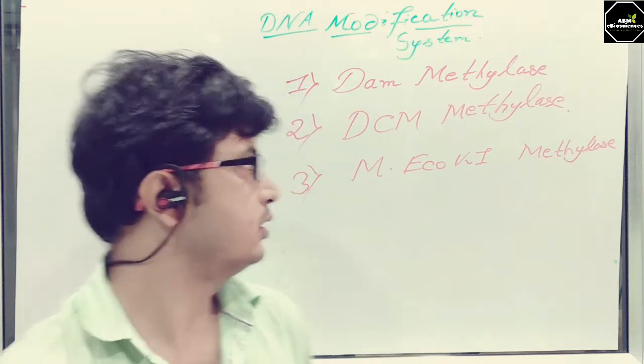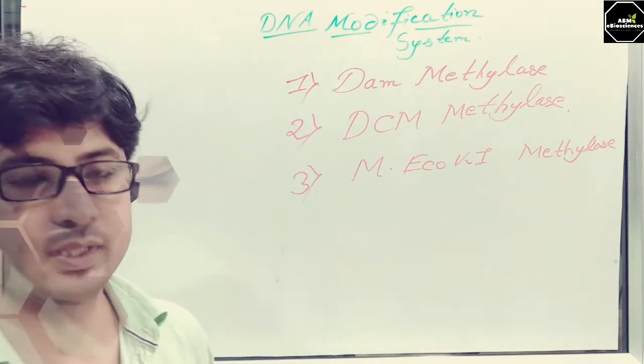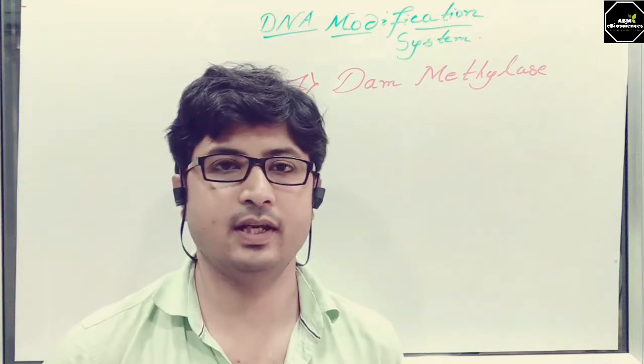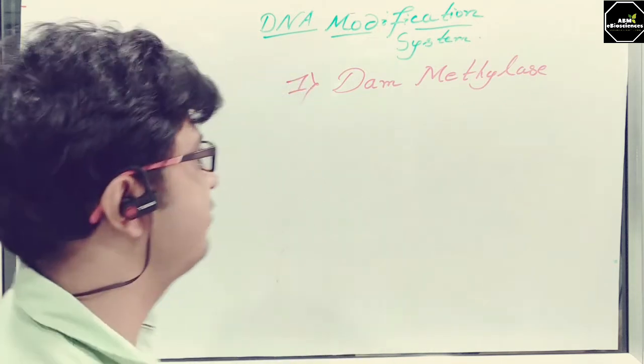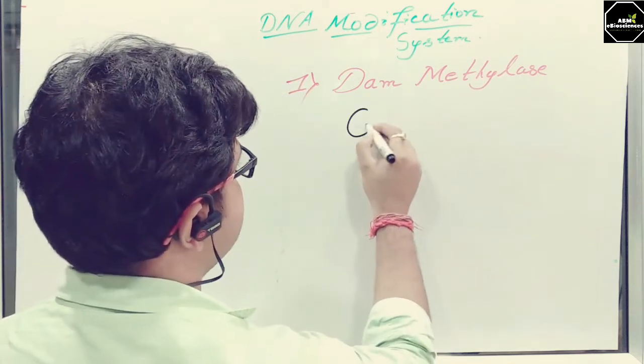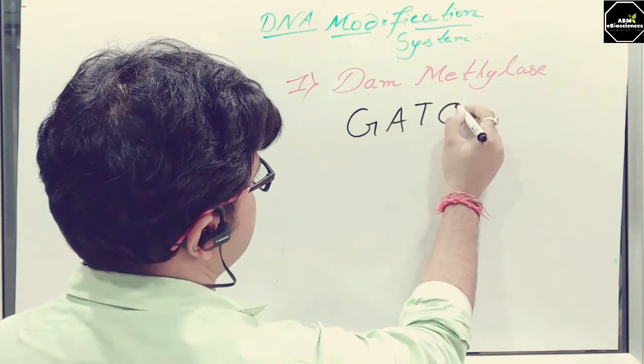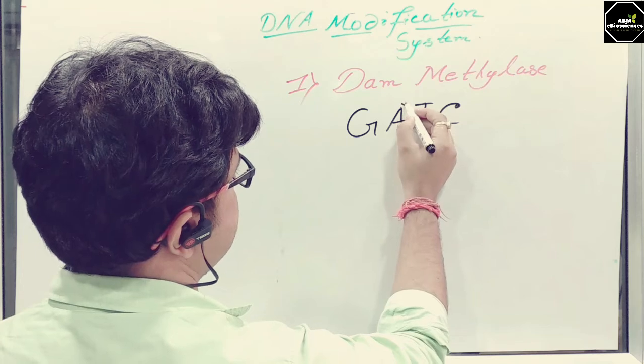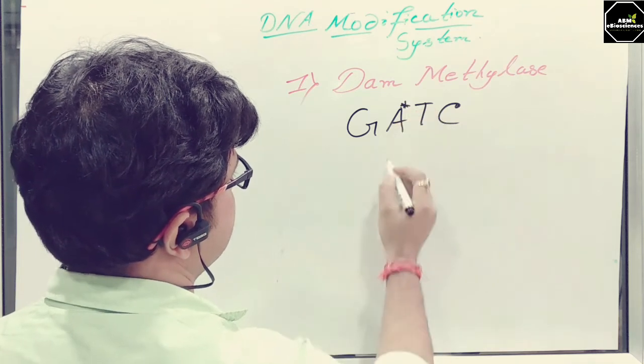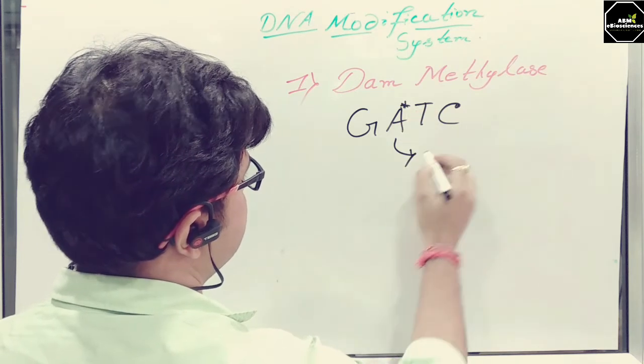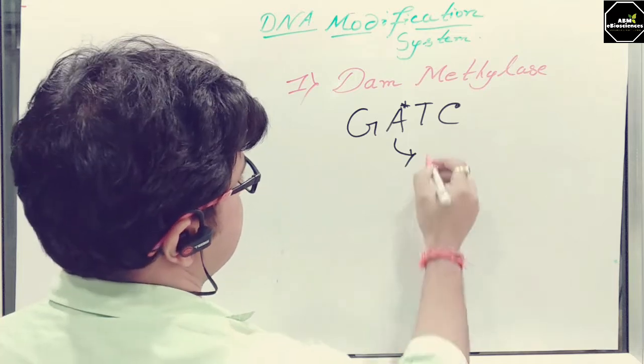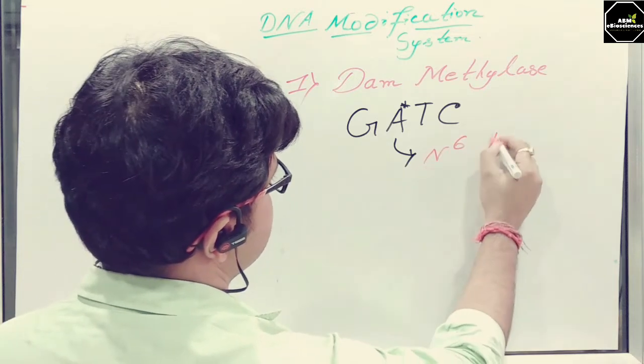One by one I'll go in detail. First one is the DAM methylase. DAM methylase is an enzyme which modifies the G-A-T-C sequence where A is methylated in N-6 position.